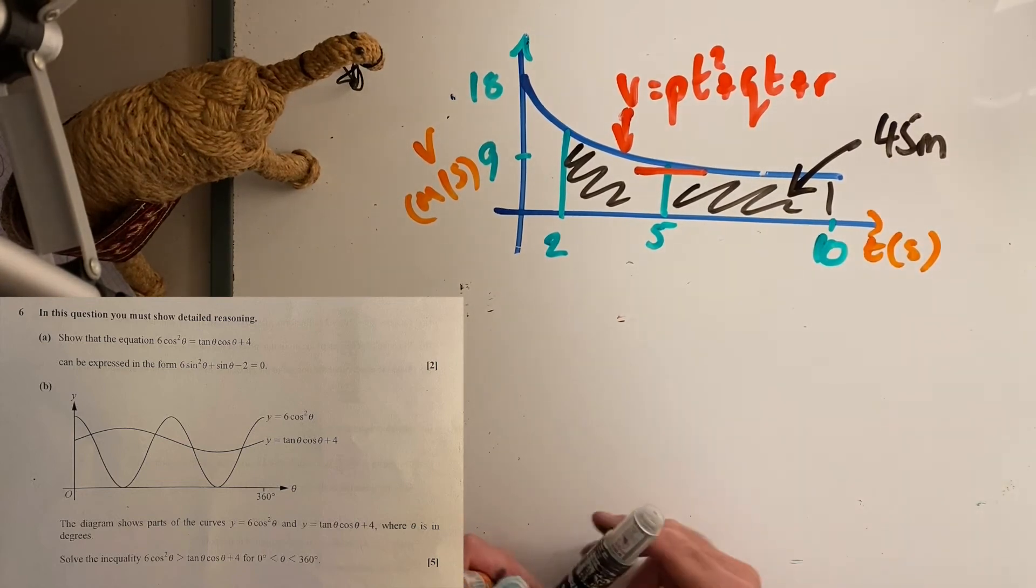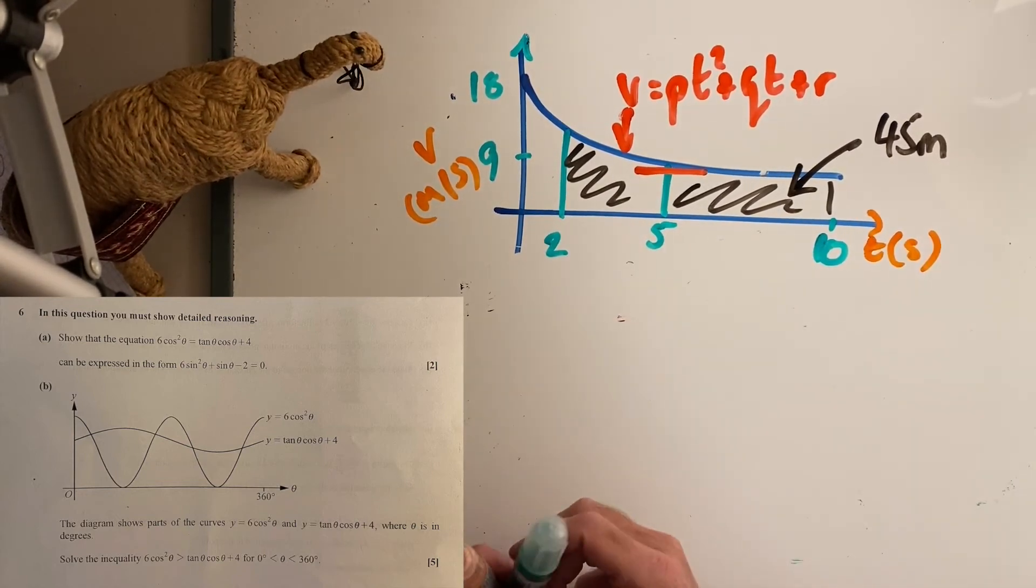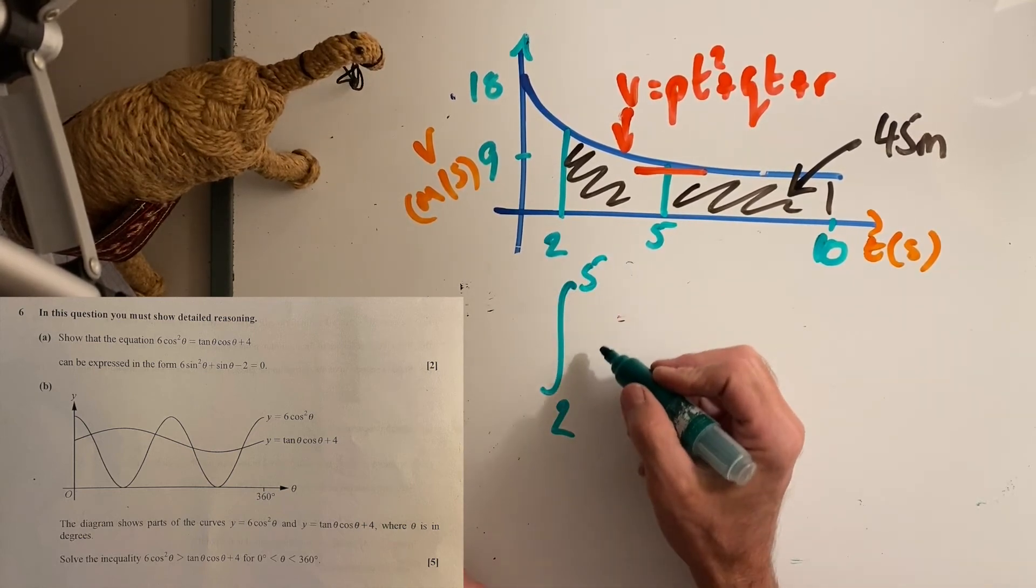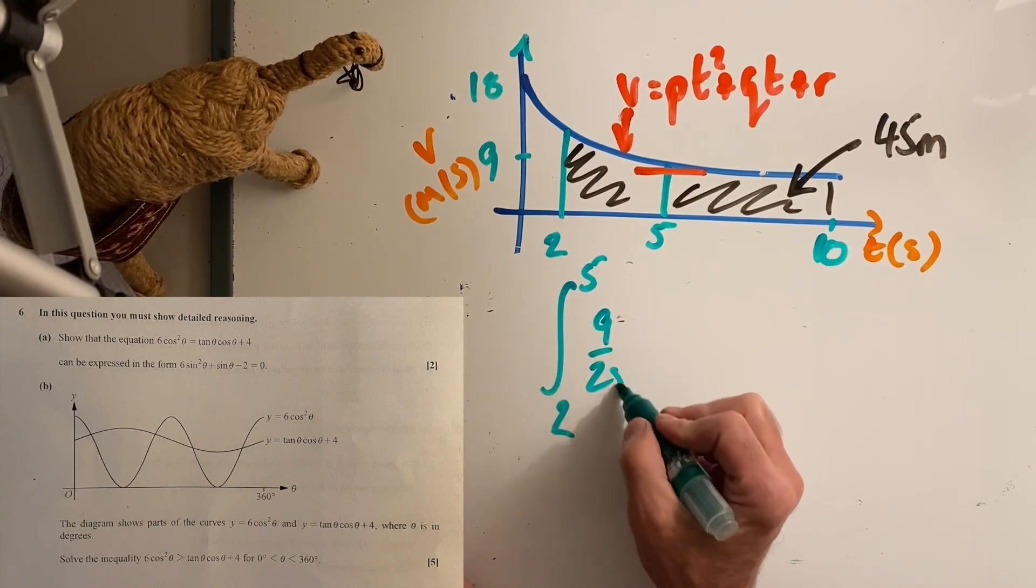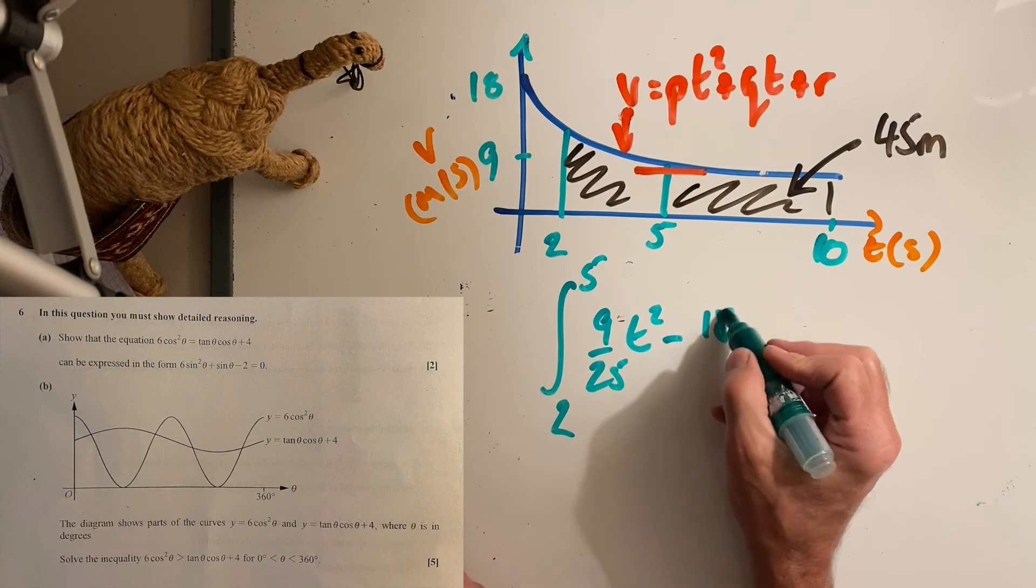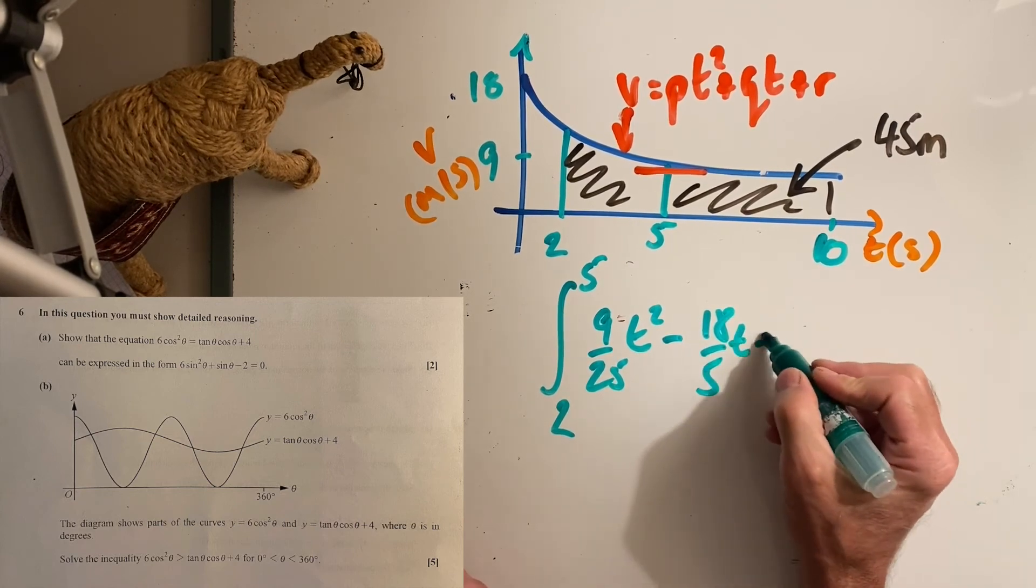Now we want to integrate between the limits of 2 and 5 of this one here. Putting our values that we already know into play gives us this. Then put that into your calculator because it does it all now, and add that...